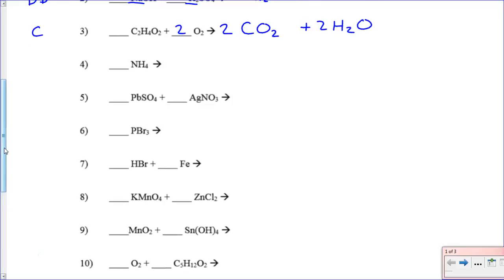Problem four has only one reactant, which means it's decomposition. It's going to break into its elements — nitrogen and hydrogen. Both nitrogen and hydrogen are diatomic elements listed in HONCLBrIF, so when they break into elements it's N₂ and H₂. To balance, put a 2 in front of the nitrogen compound. We've got two nitrogens on both sides, and eight hydrogens on the left, so we put a 4 in front of H₂. Done.